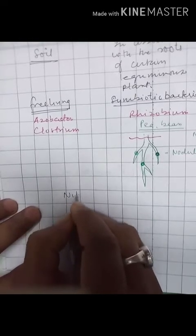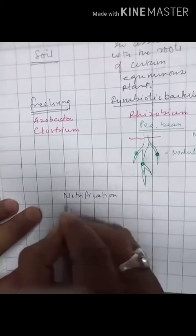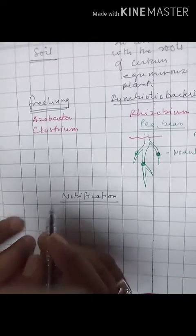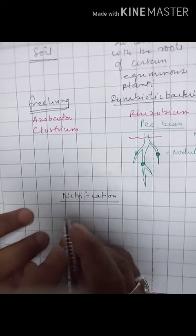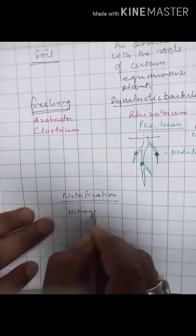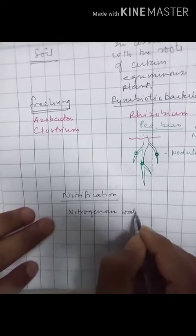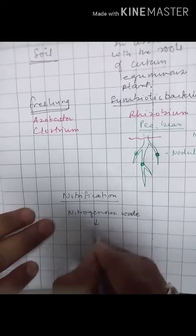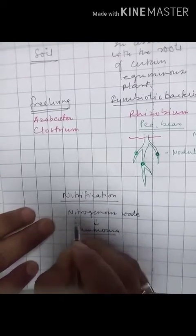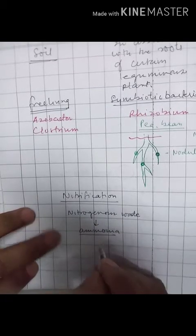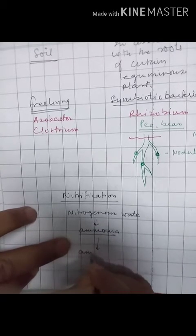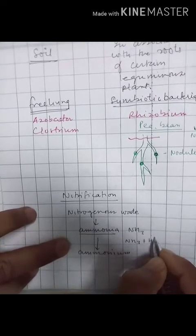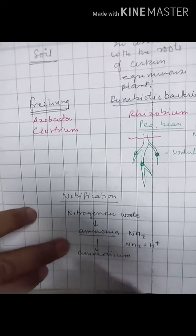In short, nitrification is the process of conversion of free atmospheric nitrogen into nitrates. First, bacteria convert nitrogenous compounds or nitrogenous waste from dead animals and plants into ammonia. Ammonia is then converted into ammonium ions.